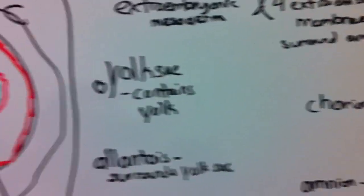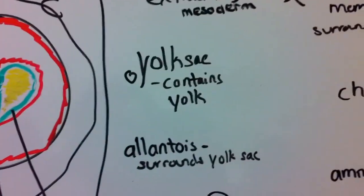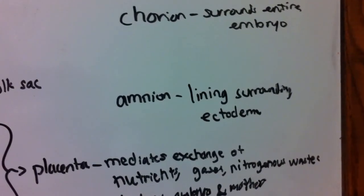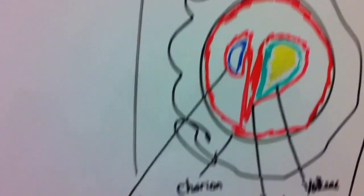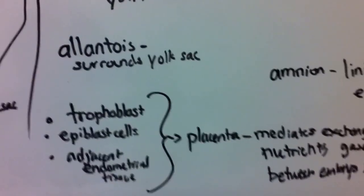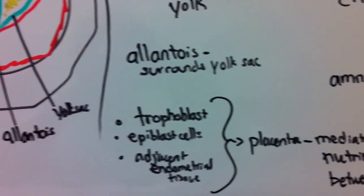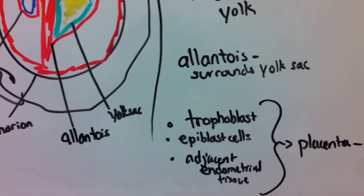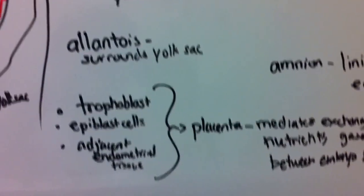The four extraembryonic membranes include the yolk sac, which contains the yolk; the allantois, which surrounds the yolk sac; the amnion, which is the lining surrounding the ectoderm; and lastly, the chorion, which surrounds the entire embryo. The trophoblast, the epiblast cells, and the adjacent endometrial tissue will combine together to form the placenta.